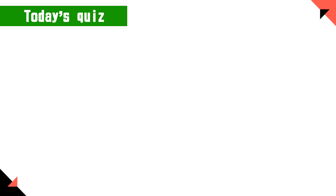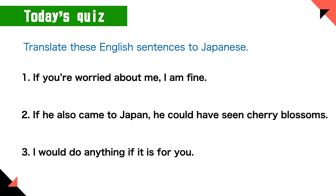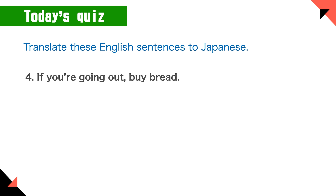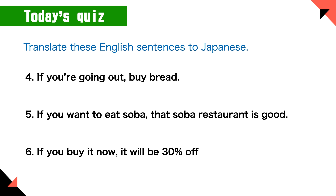Now we have quizzes — translate these English sentences to Japanese using nara. Number one: If you're worried about me, I am fine. Number two: If he also came to Japan, he could have seen the cherry blossoms. Number three: I would do anything if it is for you. Number four: If you're going out, buy bread. Number five: If you want to eat soba, that soba restaurant is good. Number six: If you buy it now, it will be 30% off. Feel free to post your answers in the comments; example answers will be in the description.